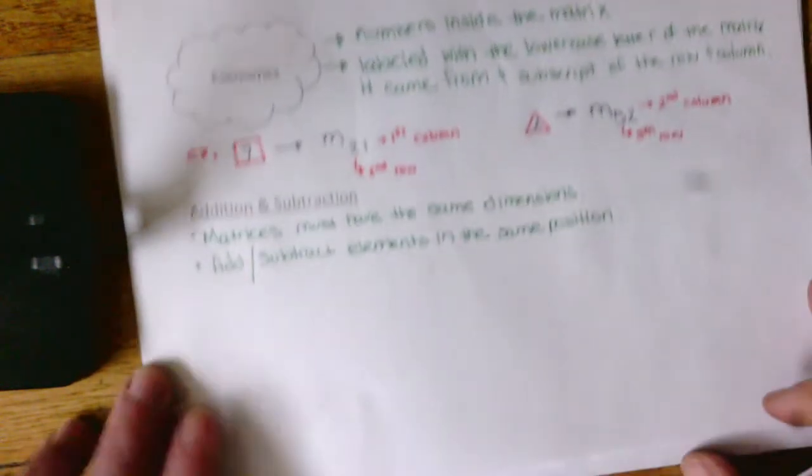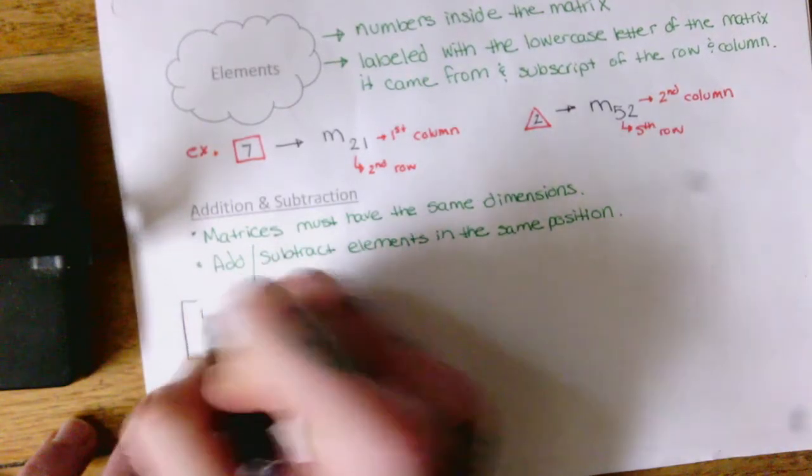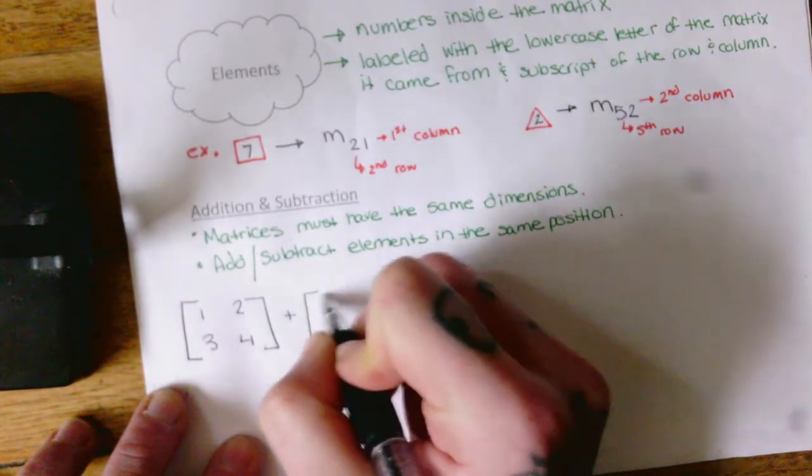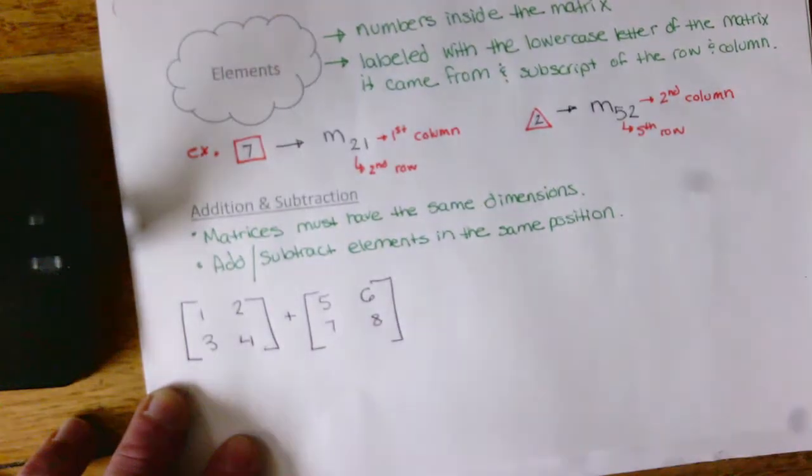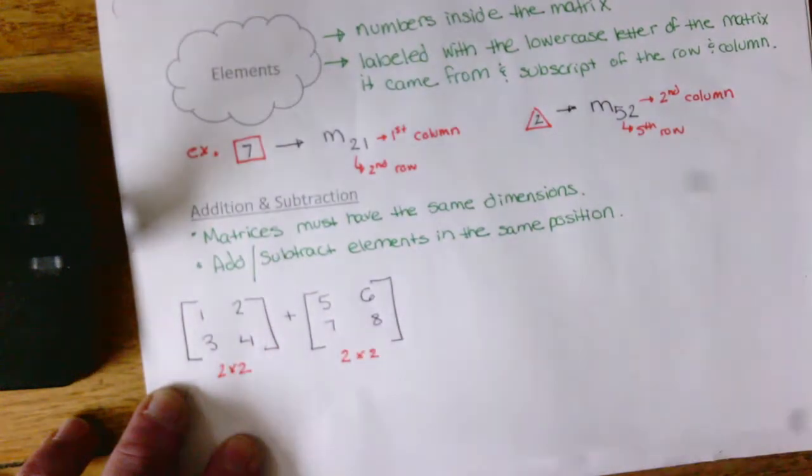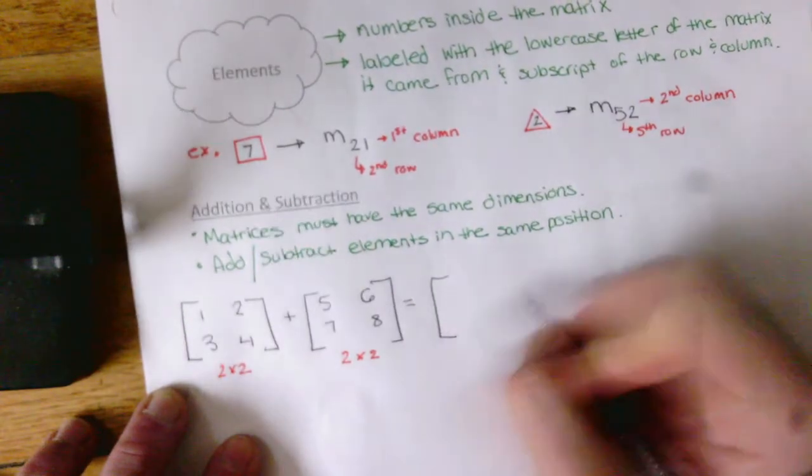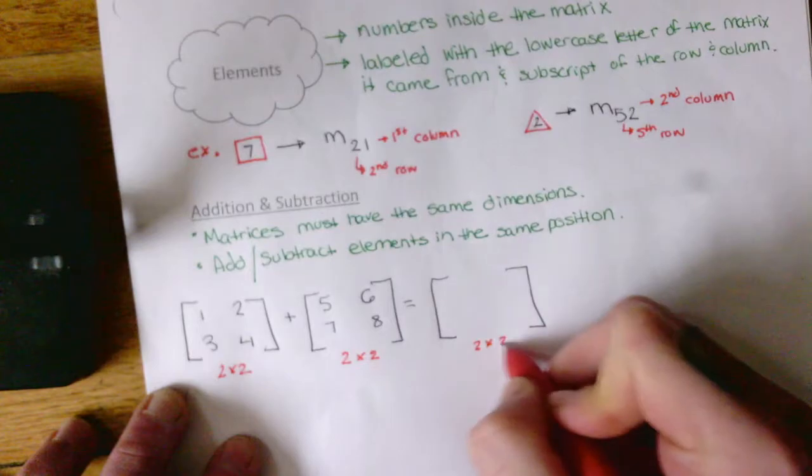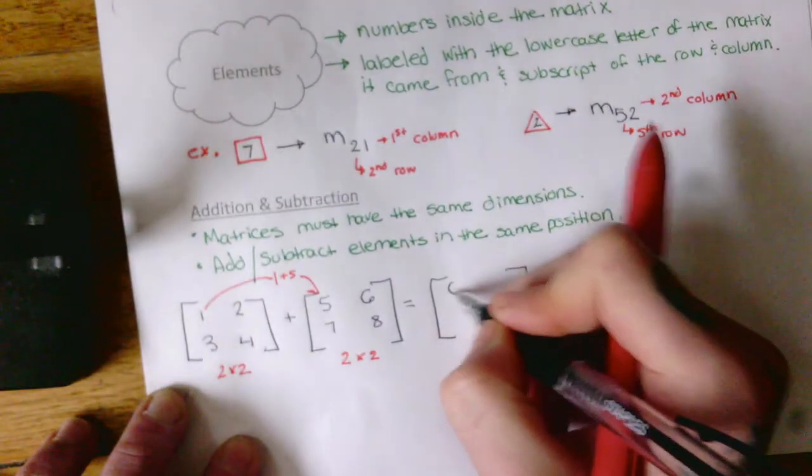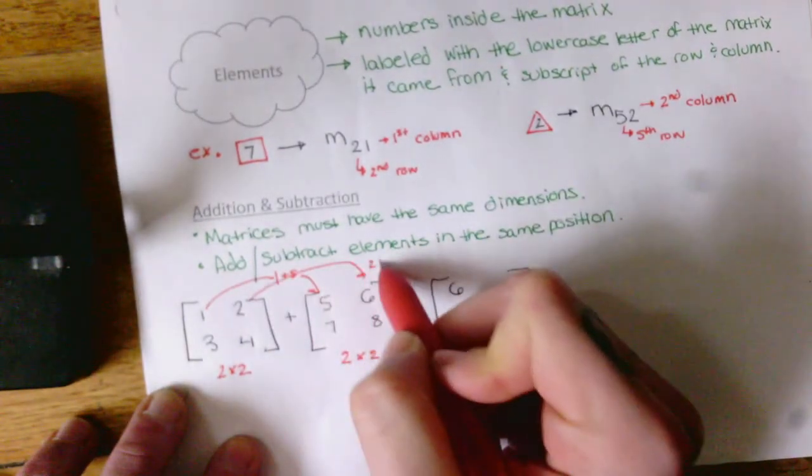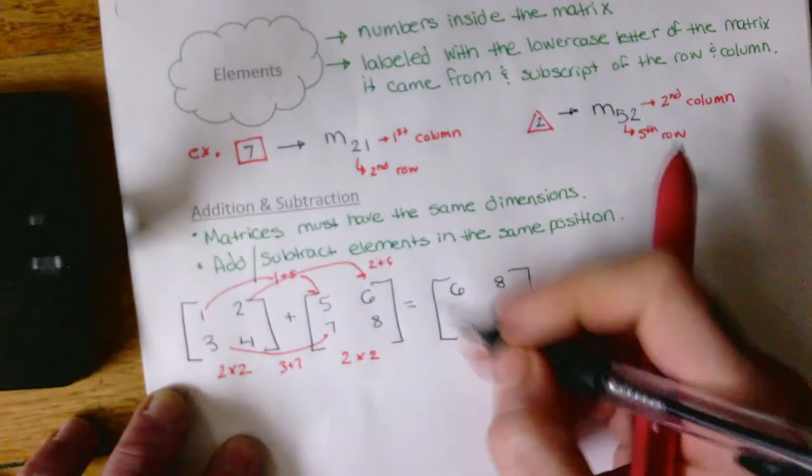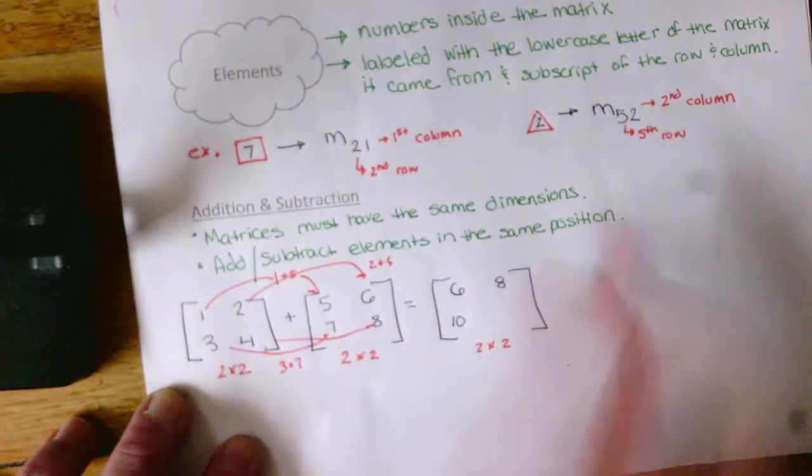Okay, so we add, kind of like the bell ringers we've been doing. Let's say for instance I have a matrix added to another matrix. The dimensions of this matrix are two by two. The dimensions of this matrix are two by two. So when I add these together, I'm going to get a two by two matrix. And I'm going to add one plus five, two plus six, three plus seven, and four plus eight.